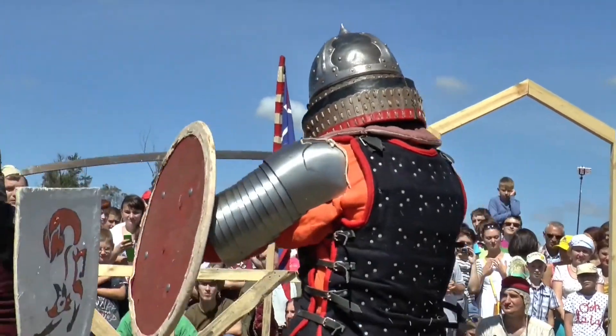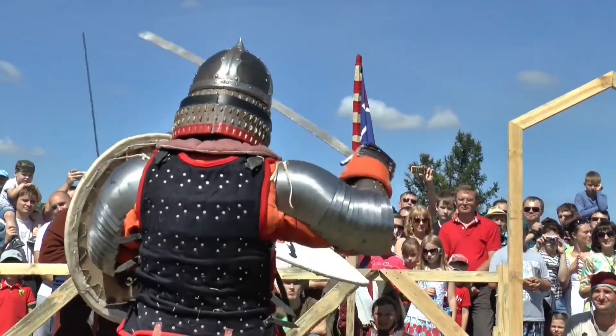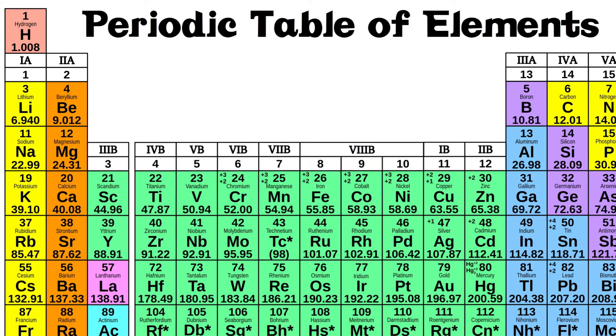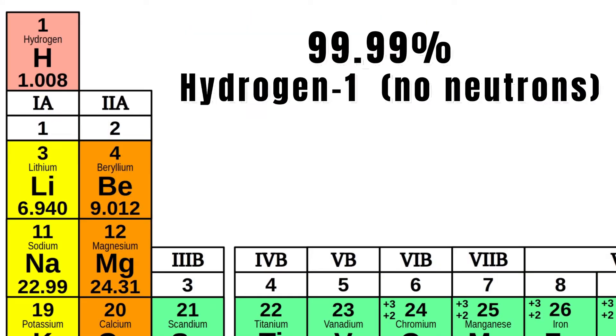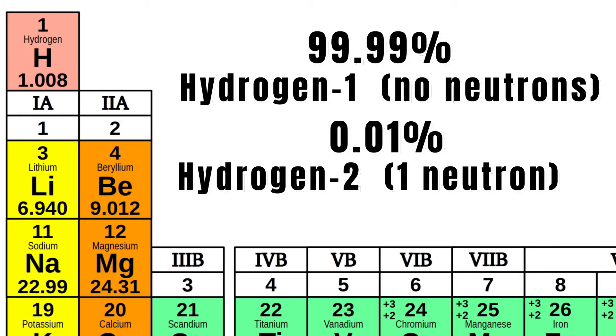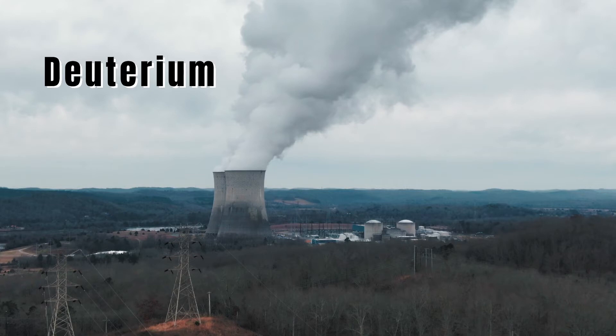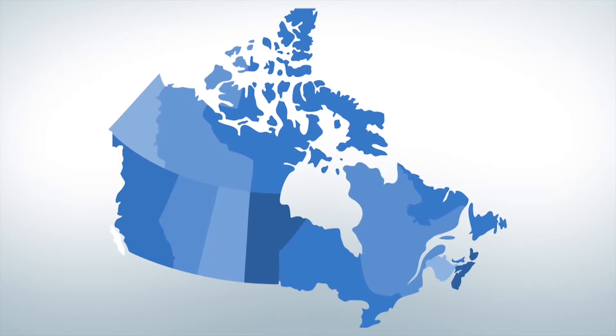Sometimes different isotopes of an element can be more useful than other isotopes. 99.99% of the hydrogen found on Earth is hydrogen with no neutrons. 0.01% of the hydrogens on Earth have an extra neutron making it hydrogen-2, often called deuterium. Deuterium is critical in some nuclear power plants like those found in Canada.